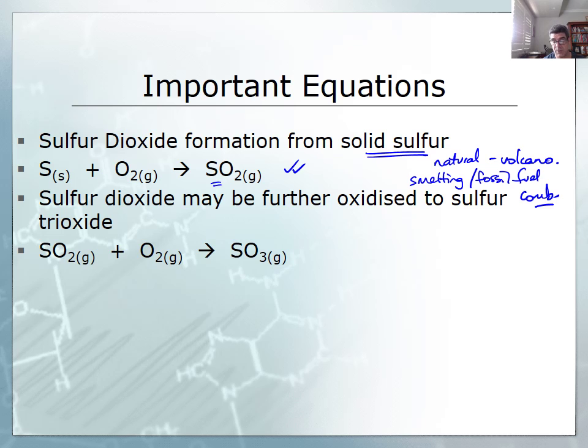Once we produce sulfur dioxide, then there's a possibility that it can further oxidize to become sulfur trioxide. This is a problem one because as I mentioned before, when this dissolves in water it produces a solution of sulfuric acid, which is a very strong acid and one that we're going to look at in more detail a little bit later on.